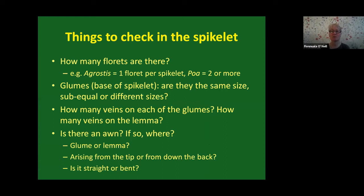Key things to check in your spikelet: how many florets are there — in Agrostis there's only one floret per spikelet; in Poa there are two or more. Are the two glumes the same size, subequal, or very different? How many veins are in each glume, and how many veins on the lemma? Is there an awn — the bristle found on some grasses? If so, is it on the glume or lemma, does it arise from the tip or the back, and is it straight or bent?